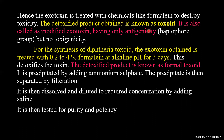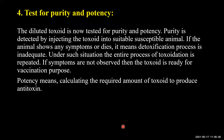The detoxified product obtained is known as toxoid, also called modified exotoxin, having only antigenicity. For synthesis of diphtheria toxoid, the exotoxin is treated with 0.2 to 0.4 percent formalin at alkaline pH for a period of three days to detoxify the toxin. The detoxified product is known as formal toxoid. It is then precipitated by adding ammonium sulfate, and the precipitate is separated by filtration.